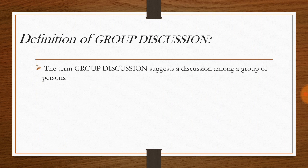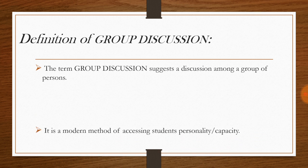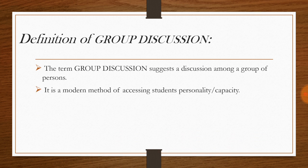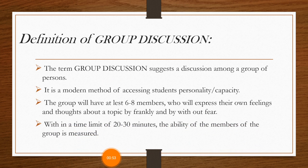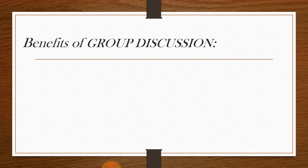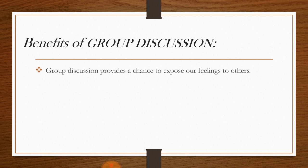The definition of group discussion: the term group discussion suggests a discussion among a group of persons. It is a modern method of assessing ability and personality. The group will have at least six to eight members who will express their own feelings and talk about a topic frankly and without any fear, within a timeline of 20 to 30 minutes, during which the ability of the members is measured.